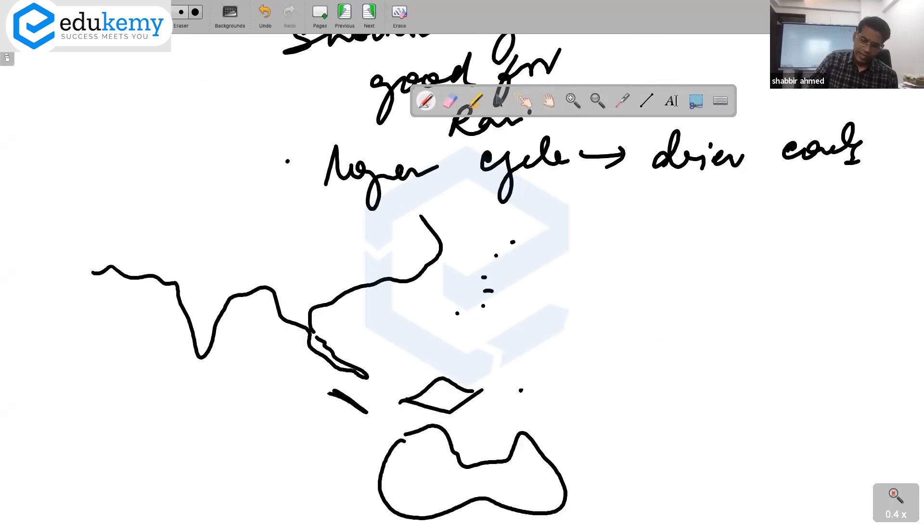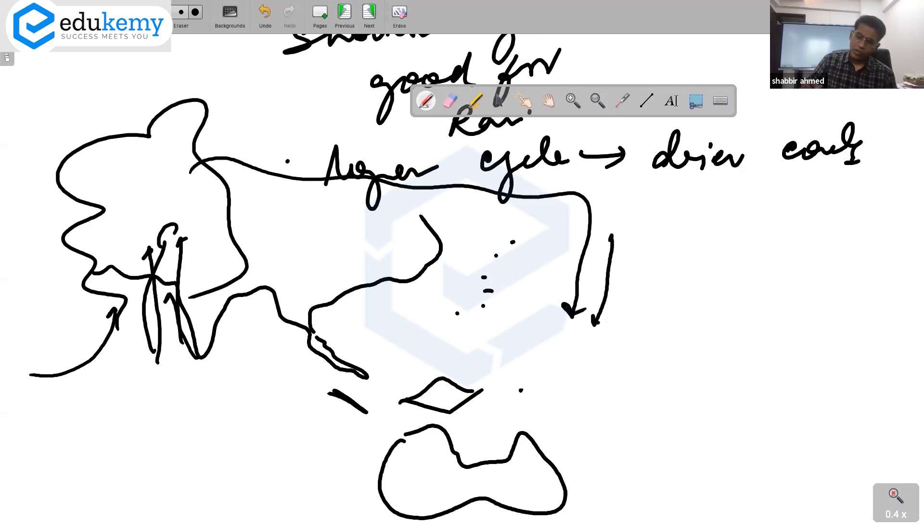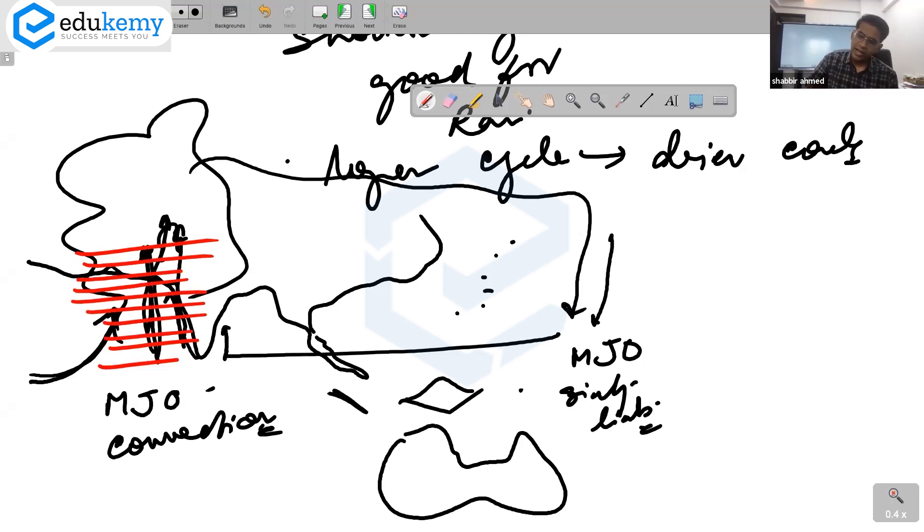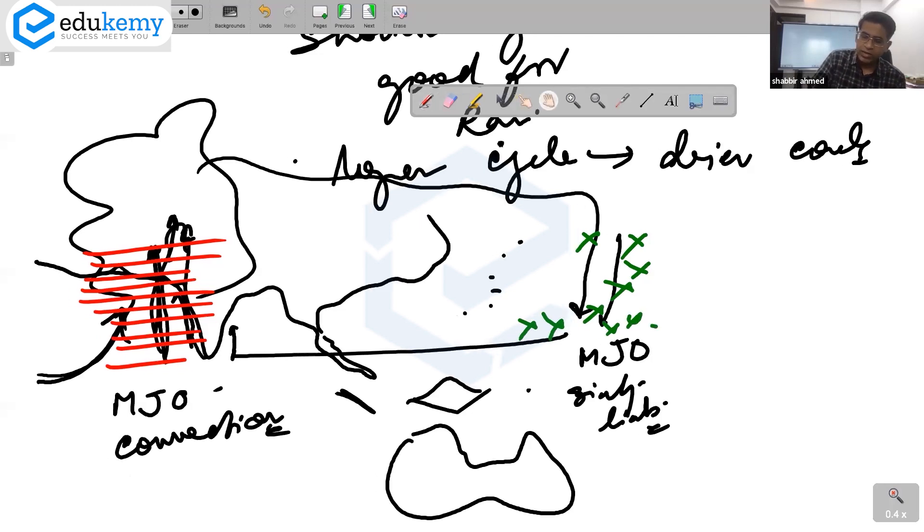For MJO, what happens here is this is a zone of rising air. And in Pacific Ocean, there is sinking air. This is the MJO convection. This is the MJO sinking limb. This is an interaction between Indian Ocean and Pacific Ocean of a different kind, not the one that we know as El Nino. In the Indian Ocean, this rising air, so this area gets good rainfall. And this area ends up having lesser rains.